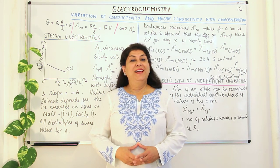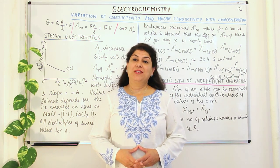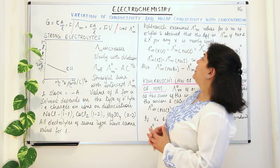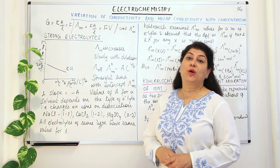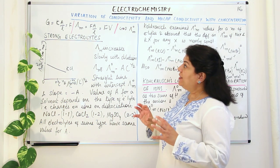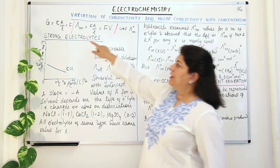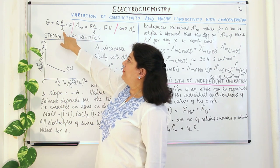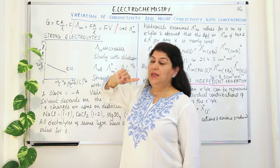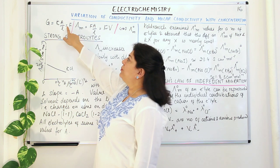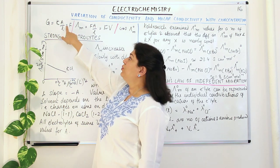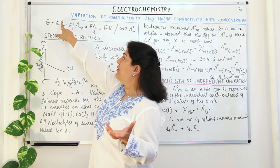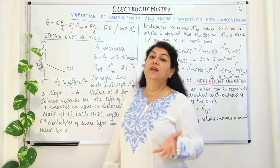Hello, I am Seema and welcome to part 16 of the chapter electrochemistry. In part 15 I started telling you about the variation of conductivity and molar conductivity with concentration. We came to the relationship that conductivity is equal to kappa into area upon length, and if area and length are unity, then the conductance would be equal to the conductivity of a solution whose area of cross-section and length are unity.